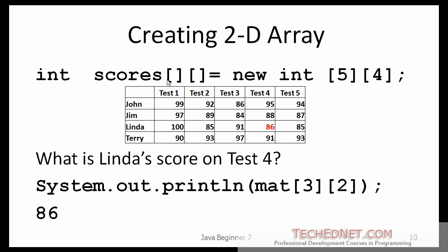Creating a 2D array — you use two pairs of square brackets and specify that the array has five columns and four rows, thinking in terms of a table. I am using this array to store test scores for five tests and four students, so I can store or retrieve a score for any student for any given test very quickly. These are the data stored in that array. To find Linda's score on test number 4, I call the array with a first index of 3 (referring to test 4, column 4) and a second index of 2 (referring to student 3, Linda), and it returns the result.